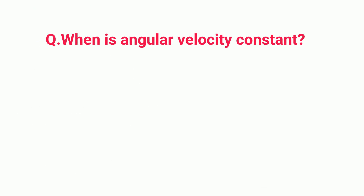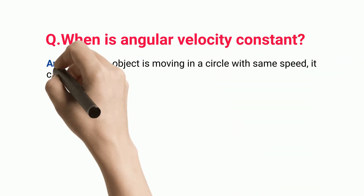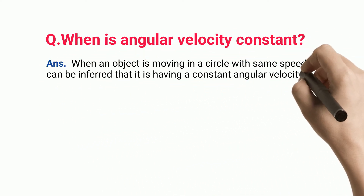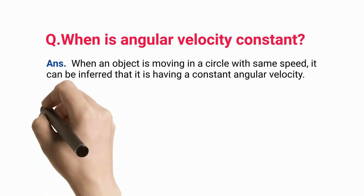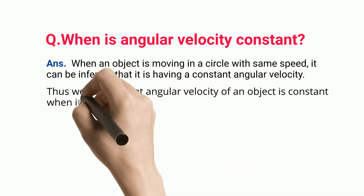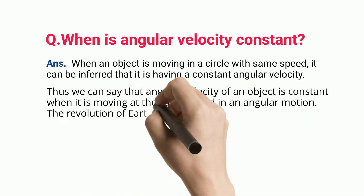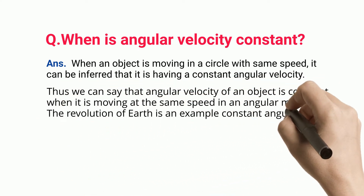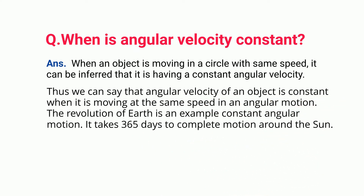When is angular velocity constant? When an object is moving in a circle at the same speed, it can be inferred that it has a constant angular velocity. Thus, angular velocity is constant when an object moves at the same speed in angular motion. The revolution of Earth around the Sun is an example of constant angular motion.